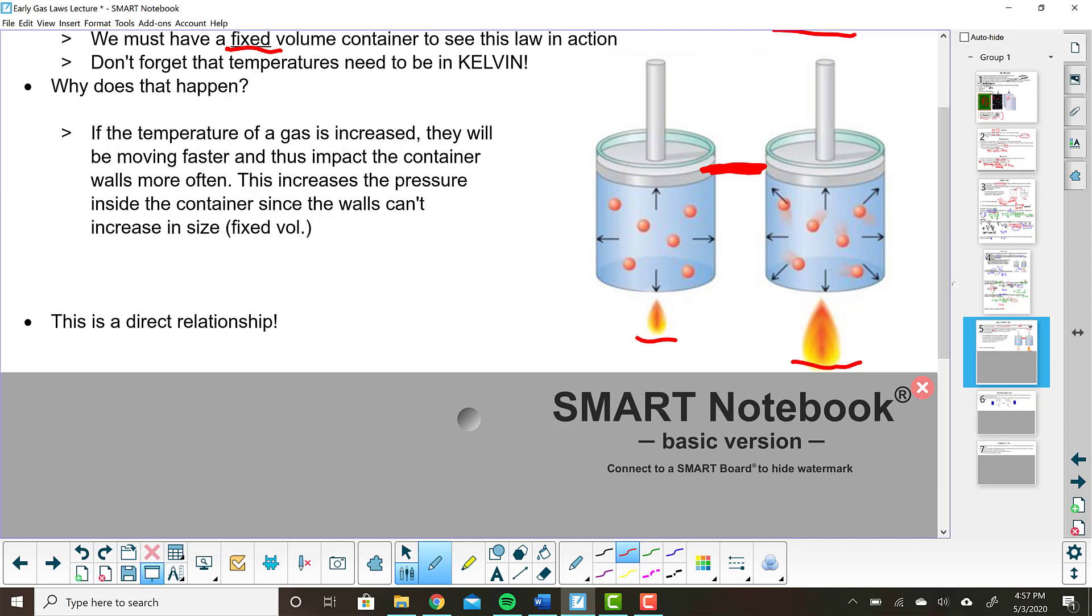And since they are moving faster they are hitting the walls of the container more. And we know that pressure is directly related to the number of impacts on the container walls. So the pressure inside the container increases since the walls can't increase. And again this is a direct relationship. If one goes up, the other one goes up. So just like we saw with Charles's law, we've got pressure, we've got temperature. If one increases, the other increases.